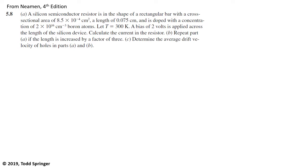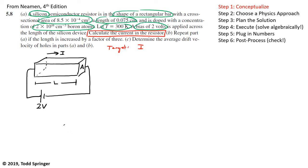Repeat part A if the length is increased by a factor of three, and part C has determined the average drift velocity of holes in parts A and B. So I've taken a moment to circle the things which I think are important in the problem to help conceptualize it. The material is silicon. The shape of the silicon is a rectangular bar, and we know the area and the length. We also know the doping concentration, 2 times 10 to the 16 boron atoms per cubic centimeter, the temperature, and it's hooked up to a 2-volt battery, a 2-volt power supply, which causes a current to flow.